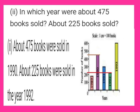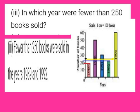Subdivision B: in which year were about 475 books sold and about 225 books sold? From the bar graph, about 475 books were sold in 1990 and about 225 books were sold in 1992. Subdivision C: in which year were fewer than 250 books sold? From the bar graph, the bars below 250 are for 1989 and 1992, so fewer than 250 books were sold in those years.